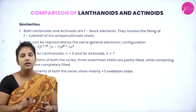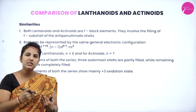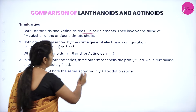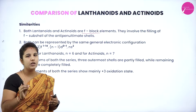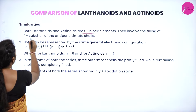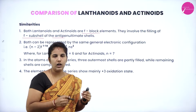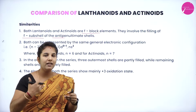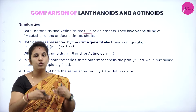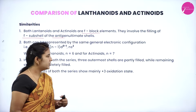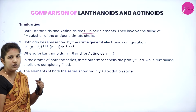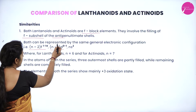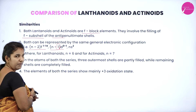Now let us understand the similarities between lanthanides and actinides. Both lanthanides and actinides belong to the F block, hence they are also known as the inner transition series. They involve the filling of F subshells of the anti-penultimate shell. Both can be represented with the same general electronic configuration, where in lanthanides the last electron is added to the anti-penultimate shell and in actinides it goes even more inward.